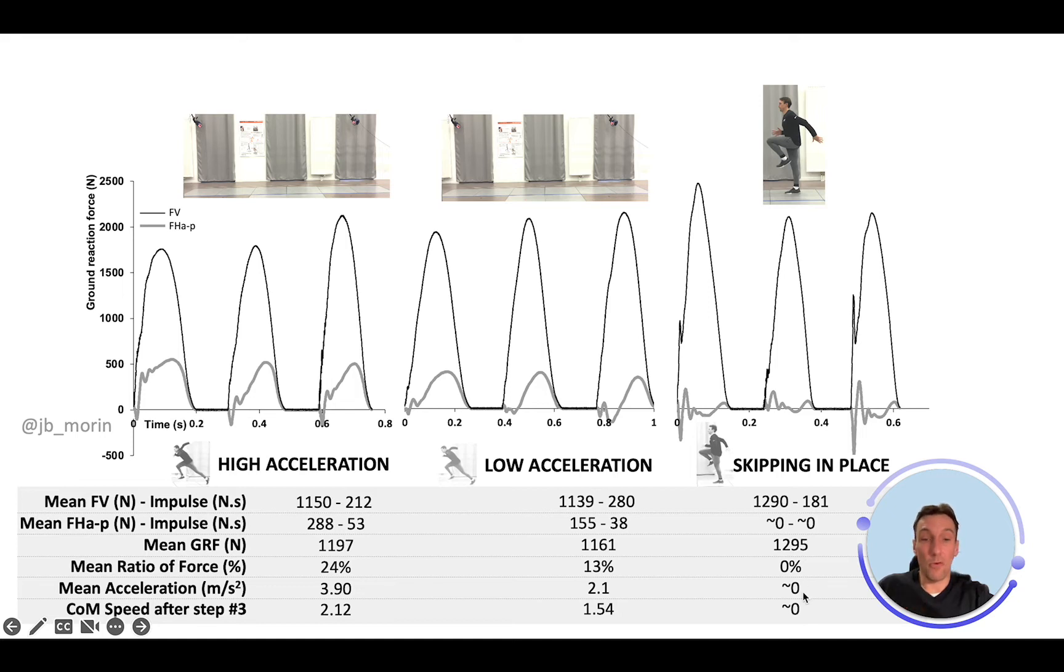When you're skipping in place, you don't have a net horizontal force, so you don't have forward motion, whatever the magnitude of the vertical component. I'll take another analogy from my colleague Pierre Samozino: in team sports like rugby or football, players walk 80 percent of the time. The magnitude of walking movement is huge.